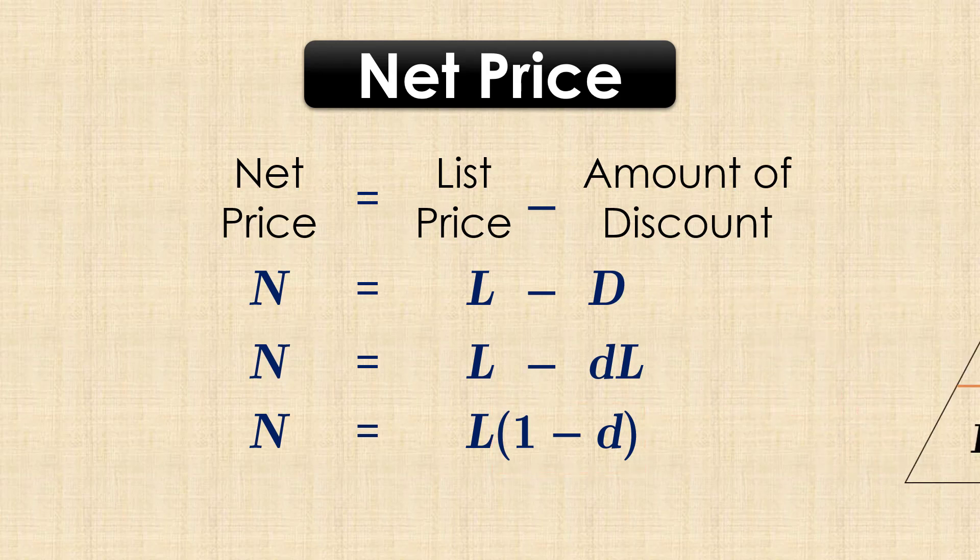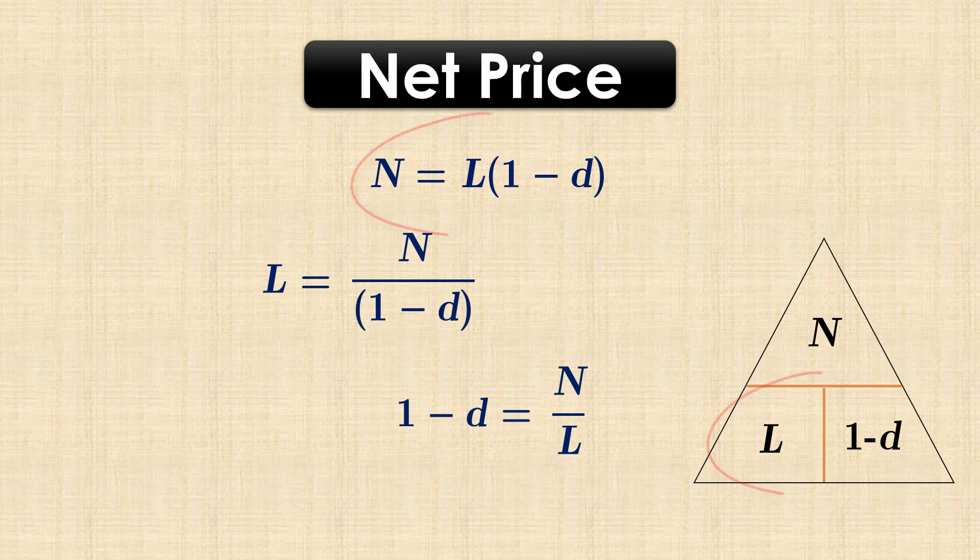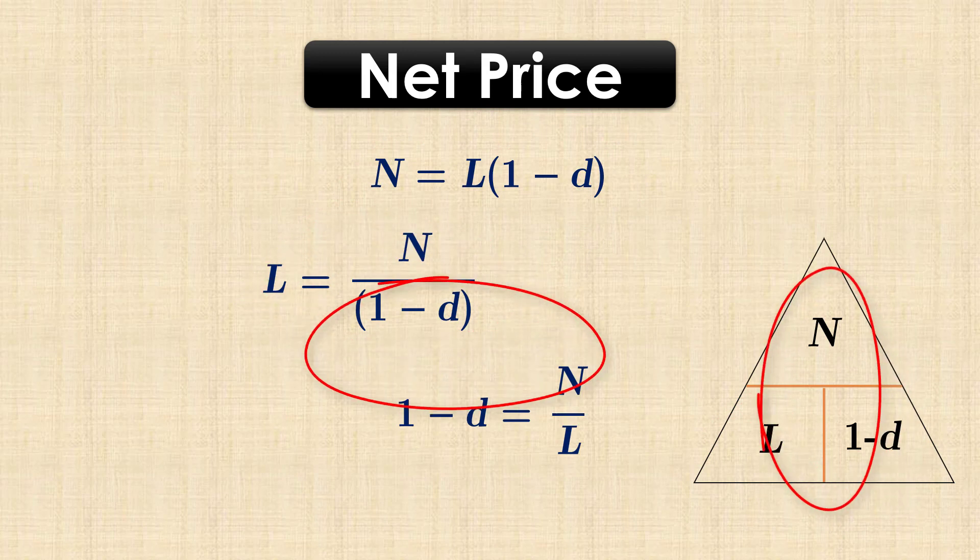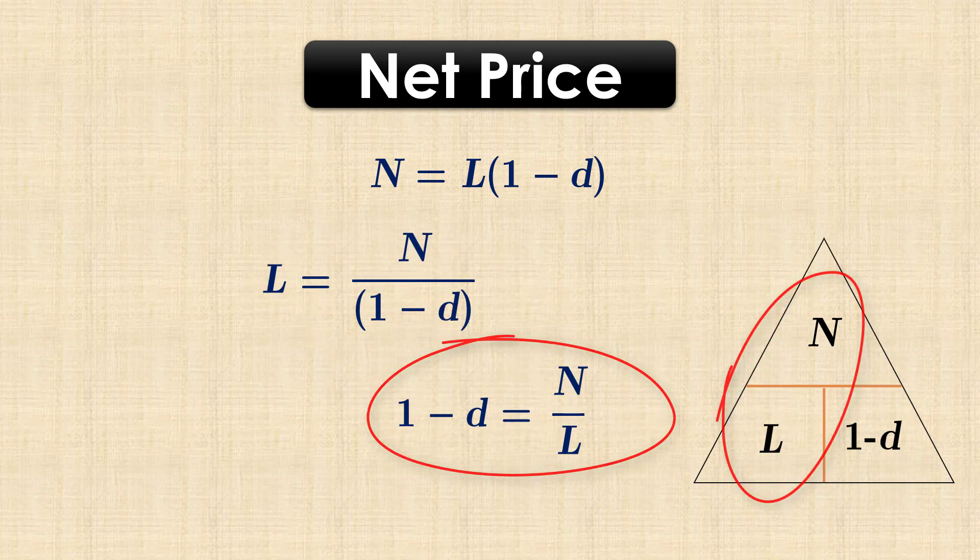We can again use this visual aid to remember the relationship. N is L times 1 minus D, L equals N over 1 minus D, and 1 minus D is N over L.